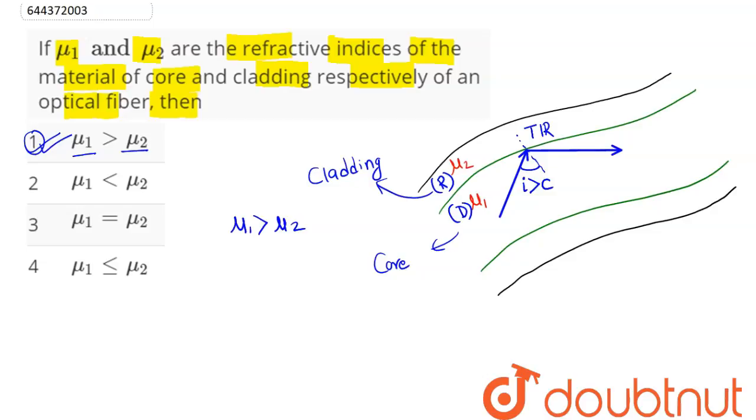The material used in cladding is preferred such that its refractive index with respect to the core decreases the relative refractive index value. Hence, option number 1 is the correct answer.